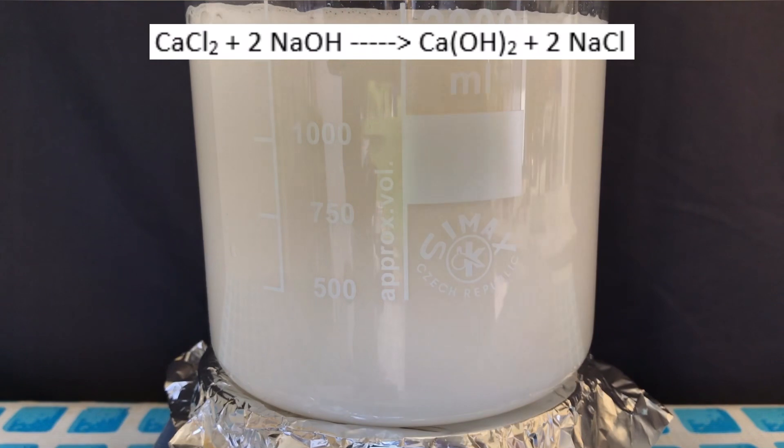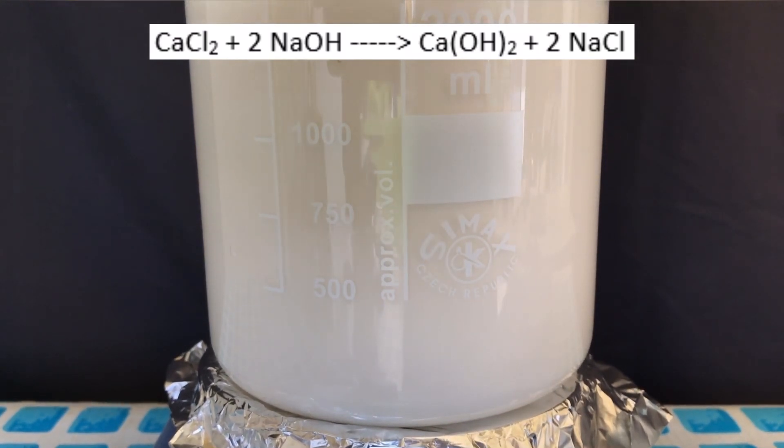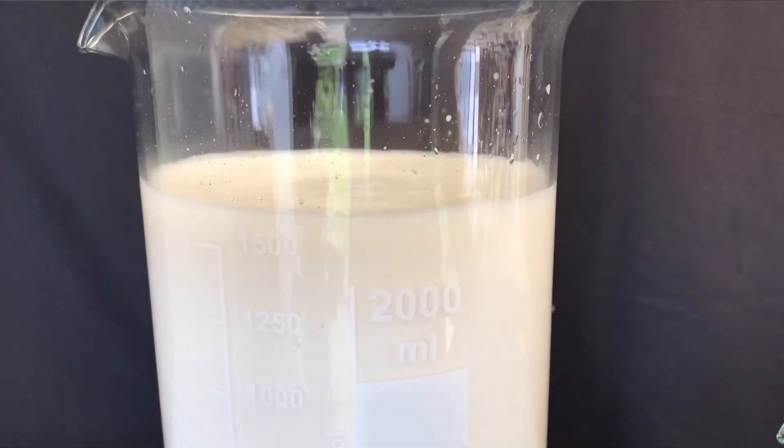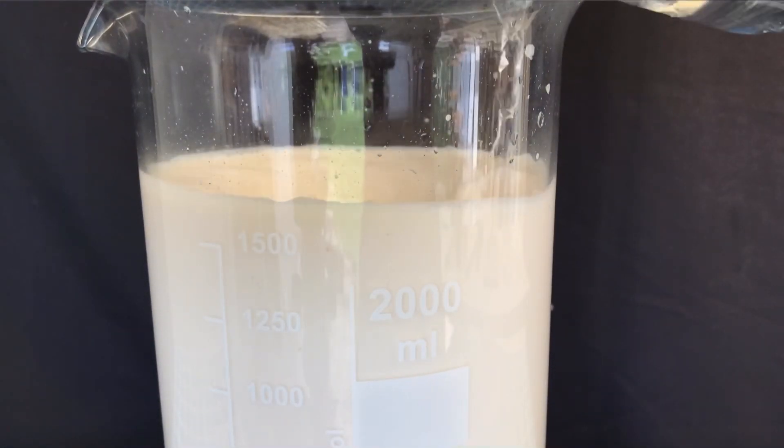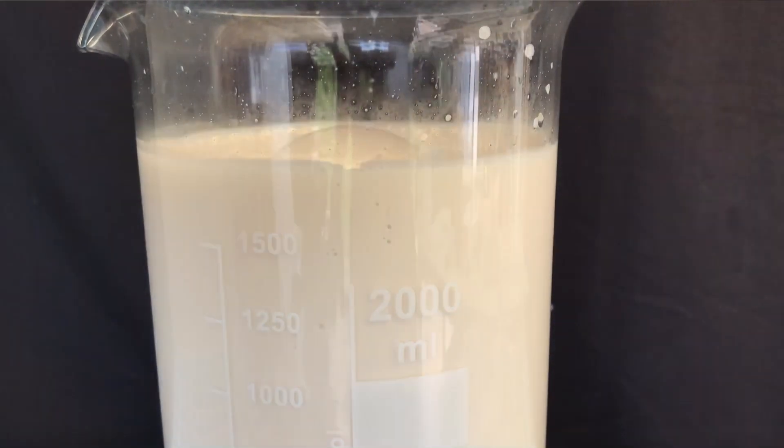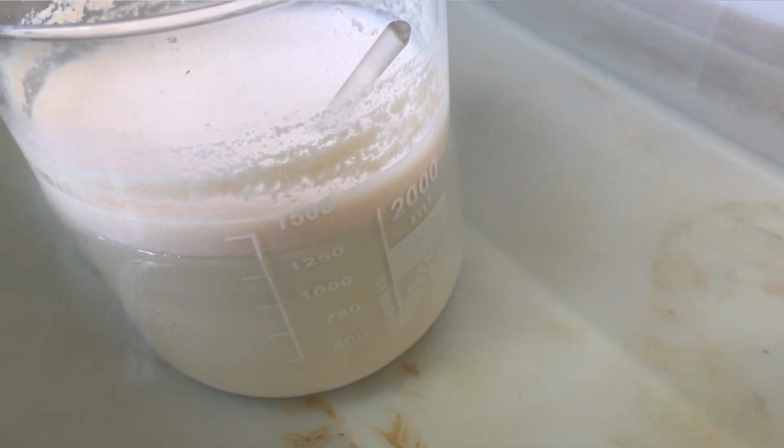Here's the reaction. Calcium chloride reacts with sodium hydroxide to form calcium hydroxide and sodium chloride. It would be possible to use calcium hydroxide directly, but by generating it in the beaker, you get extremely fine calcium hydroxide, which reacts with the hydrogen peroxide even better, because it has a high surface area.